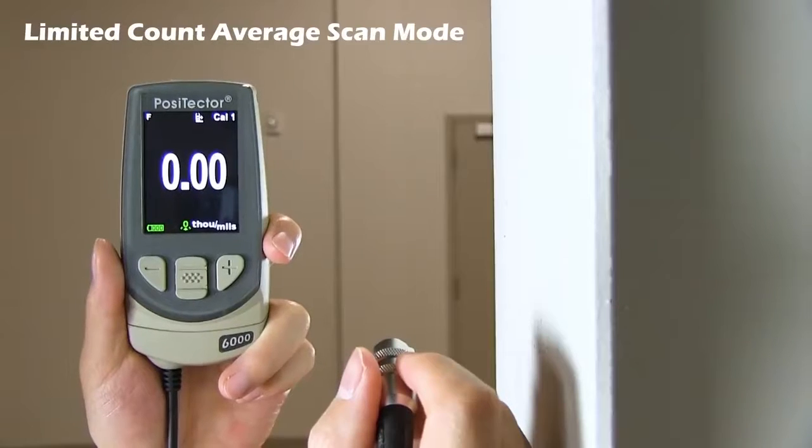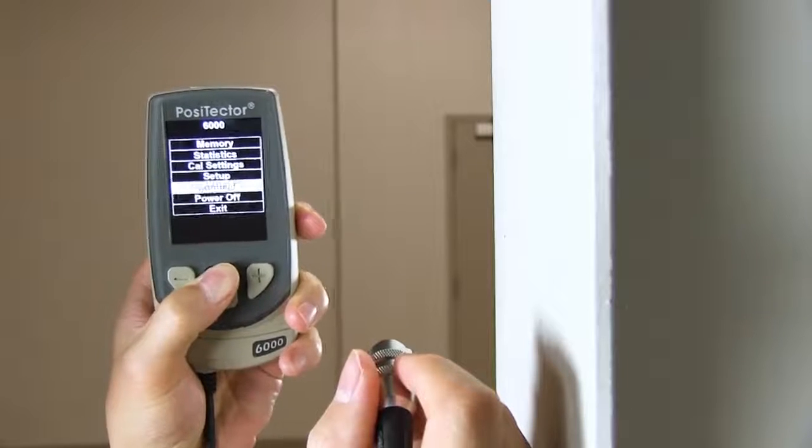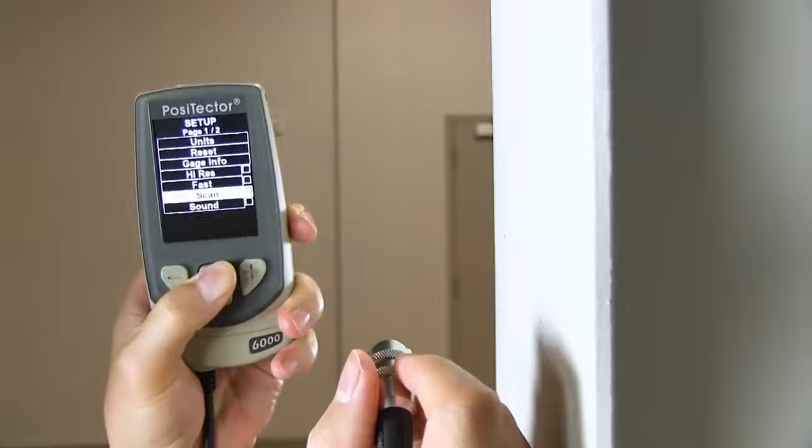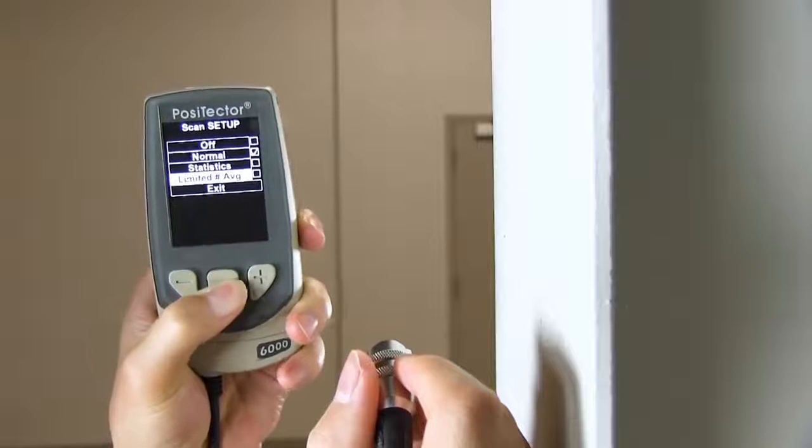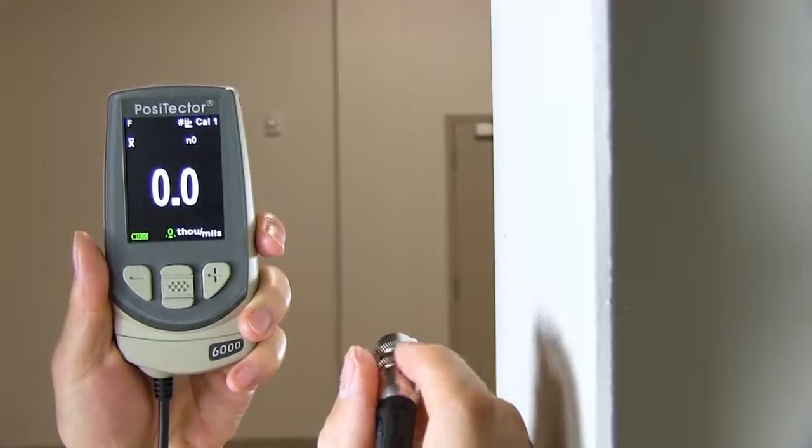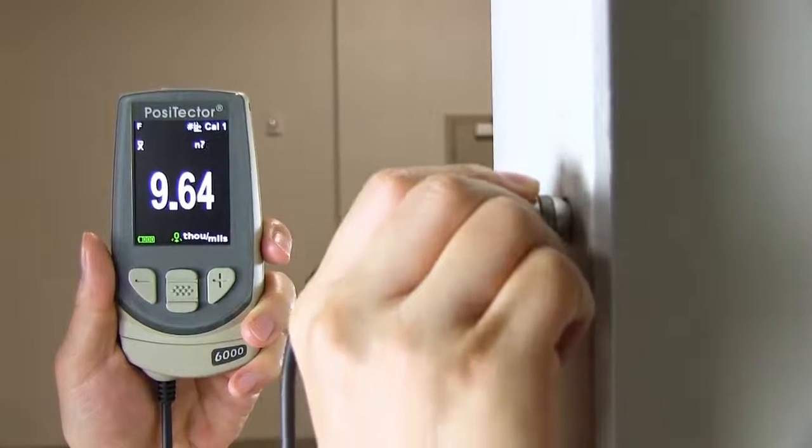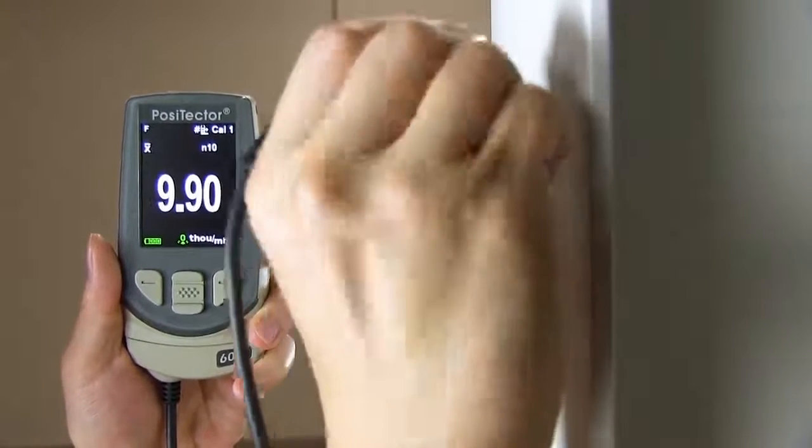In limited count average scan mode, the user is prompted to select a number of readings per scan. Each time the probe is placed on the surface, the selected number of readings is taken. The average is displayed on the screen and saved into memory if enabled. Like statistics scan mode, the individual readings aren't displayed or saved into memory.